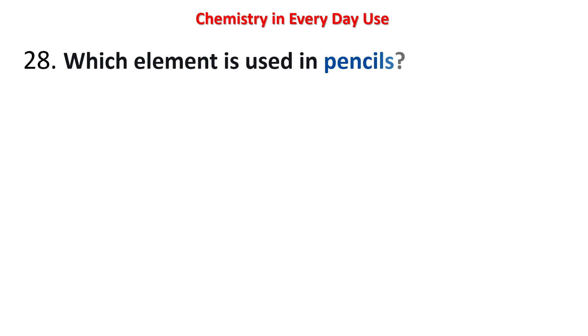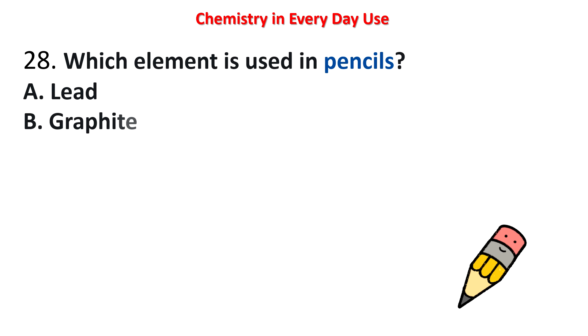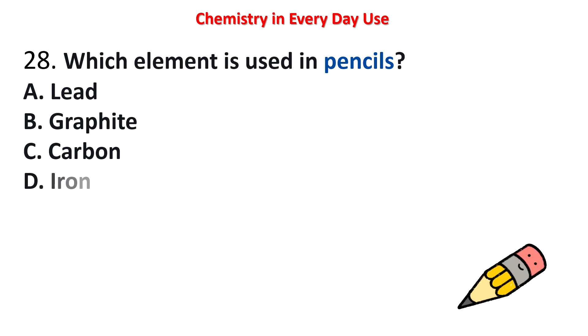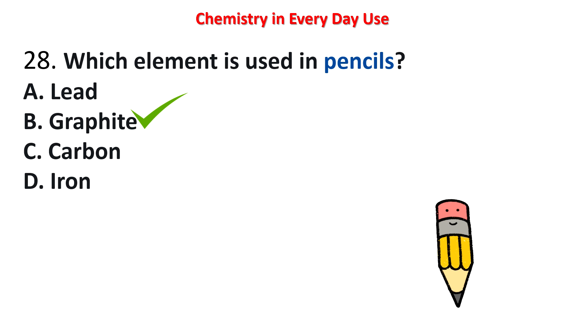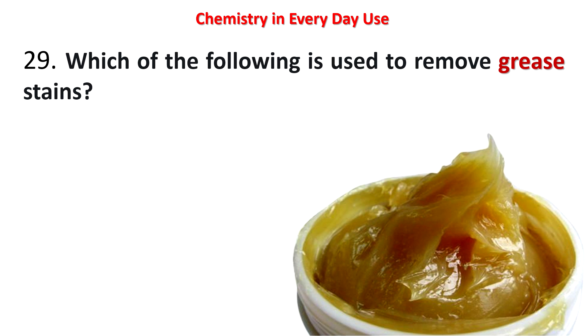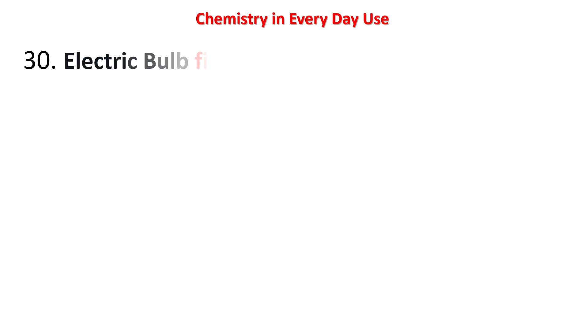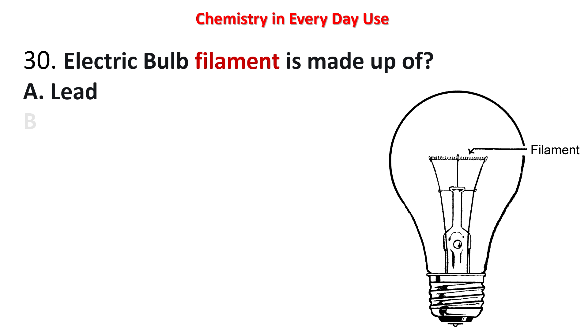Next question: which element is used in pencils? Options: lead, graphite, carbon, iron. The answer is graphite. Next question: which of the following is used to remove grease stains? Options: vinegar, ammonia, sodium bicarbonate, acetone. The answer is acetone — it is used to remove grease stains.